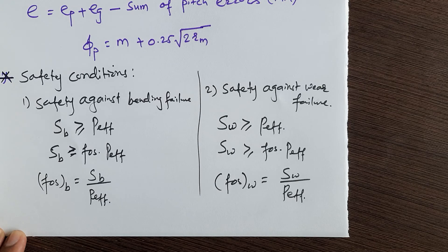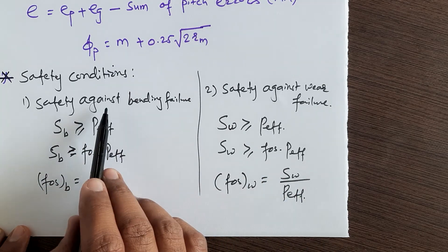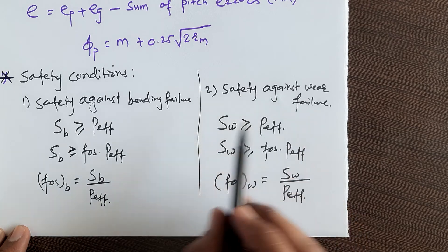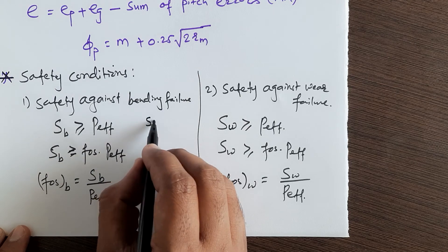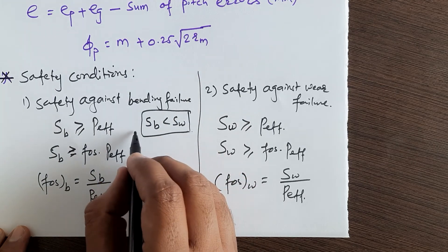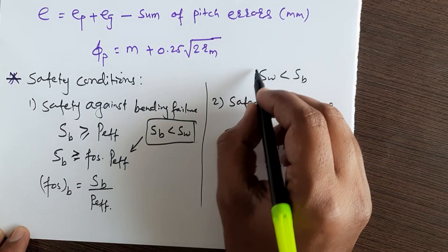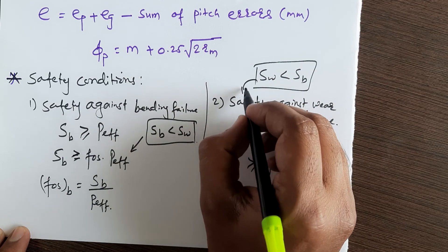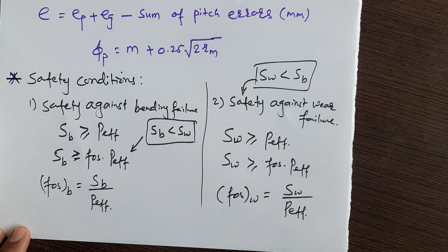At the end of the design, you only need to check one safety condition — either against bending or against wear — whichever is smaller. If SB is less than SW, check the bending safety condition. If SW is less than SB, check the wear safety condition. Whichever strength value is smaller governs the check.